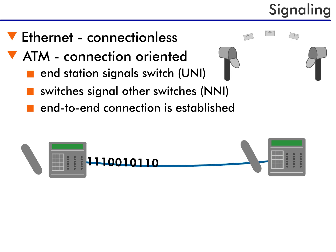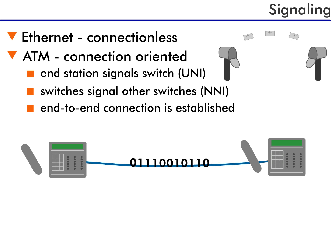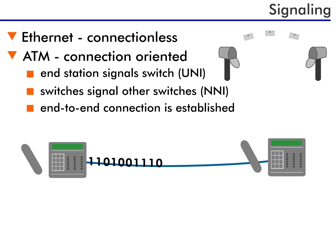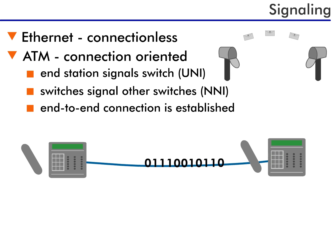So, just as when you make a phone call, when you communicate with ATM, you must first establish a connection with the destination. When you want to communicate from your PC, ATM signals the local switch and requests a connection with the remote device you are trying to contact. The remote device's ATM address is included in the message.